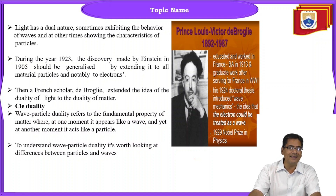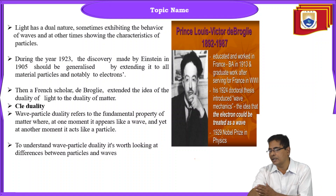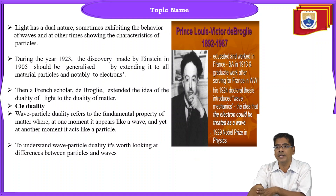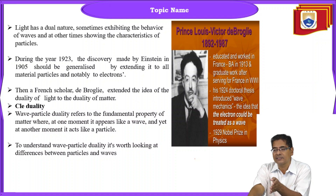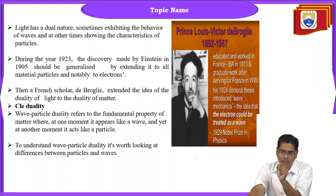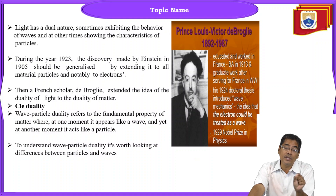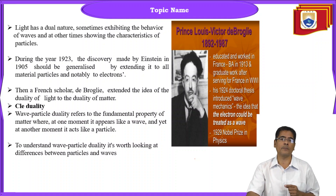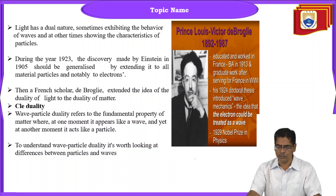Wave-particle duality is a fundamental property of matter, where at one moment it appears like a wave and at another moment it acts like a particle. Light in the form of radiation sometimes appears like a wave and at other times acts as a particle. When we consider this idea for an electron, the electron sometimes behaves as a wave and sometimes as a particle. This is what was proposed by Louis de Broglie.